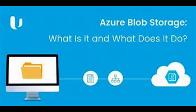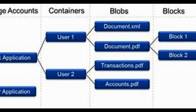For example, if we create a container called 'videos' and want to differentiate between professional and personal videos, we can prefix the blob names accordingly — such as 'personal_video1', 'personal_video2' for personal videos, and 'professional_video1', 'professional_video2' for professional videos. This way we can create a virtual hierarchy, even though we cannot create a container within a container in Azure Blob Storage.